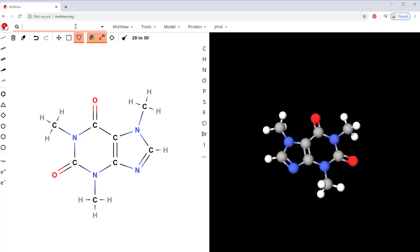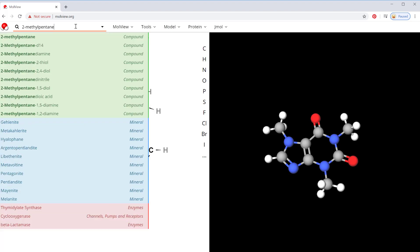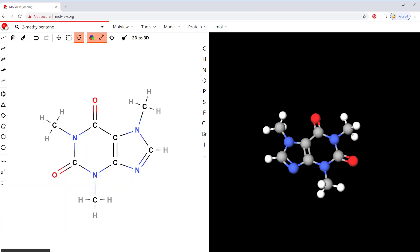So let's say you want to look at 2-methylpentane. You can see it gives you all kinds of different names and compounds that you could look at.